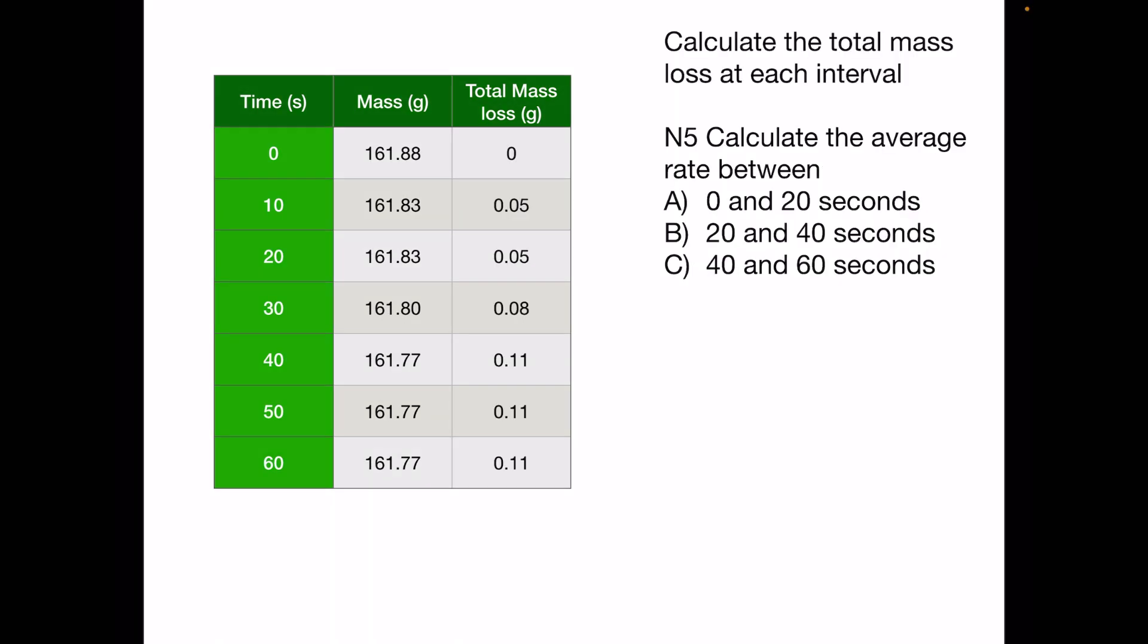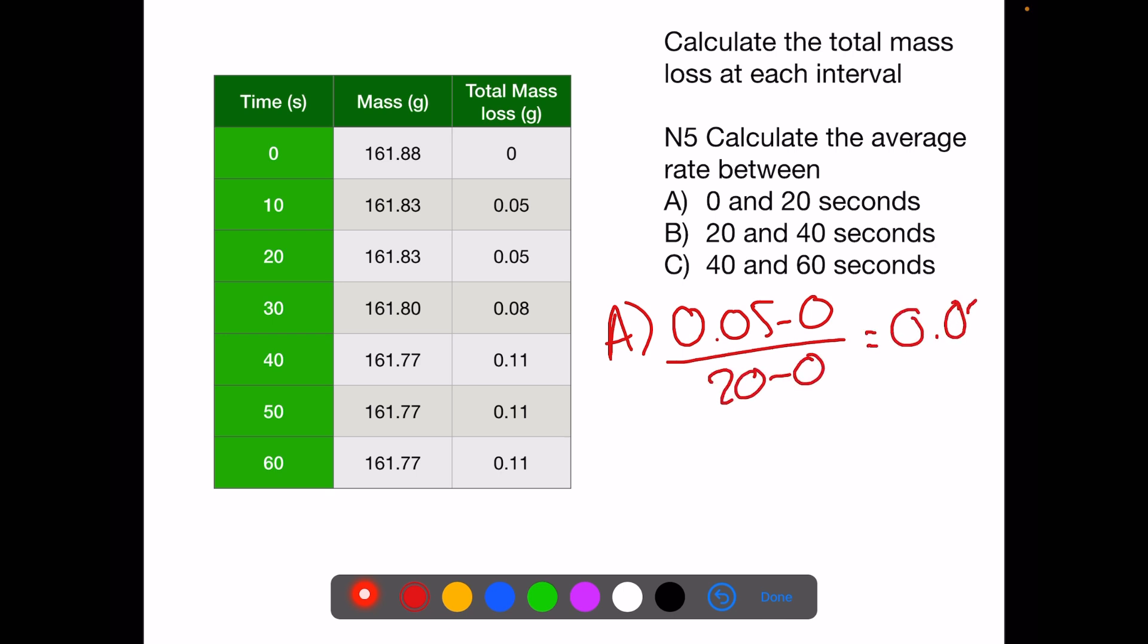The total mass loss is shown in the final column. This is the total mass loss compared to 0 seconds. For the average rate for A, between 0 and 20 seconds, we have 0.05 minus 0 divided by 20 minus 0, which is 0.0025. For B, we have 0.11 minus 0.05 divided by 40 minus 20, which is 0.003. And for C, we have 0.11 minus 0.11 divided by 60 minus 40, which is 0. This method of following rate can be quite difficult, and you do get strange irregularities like this.